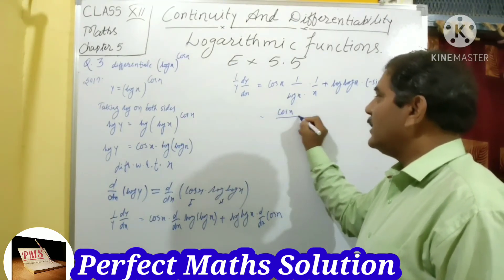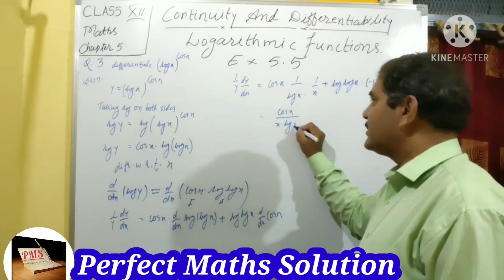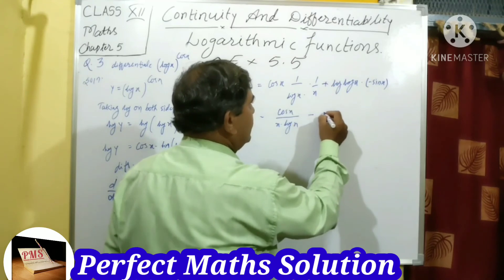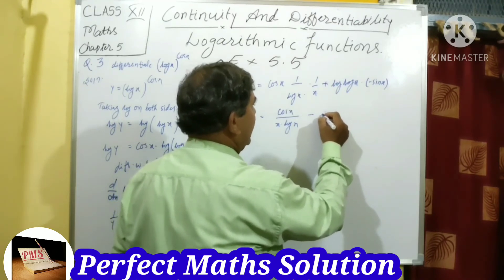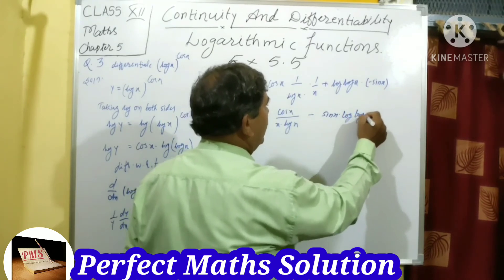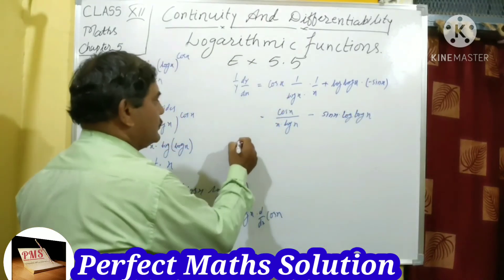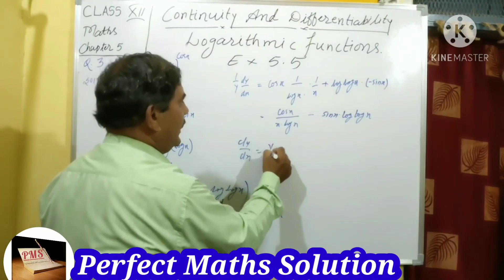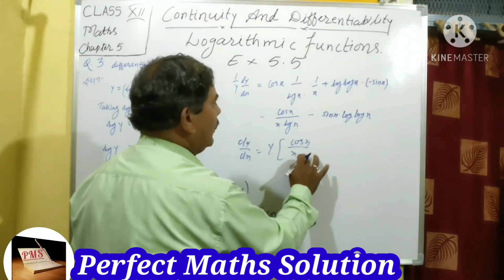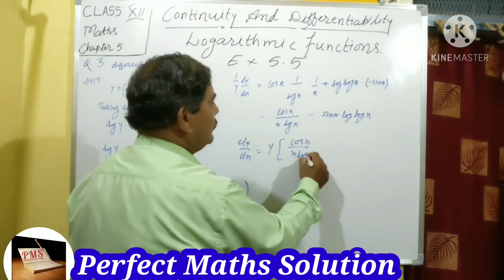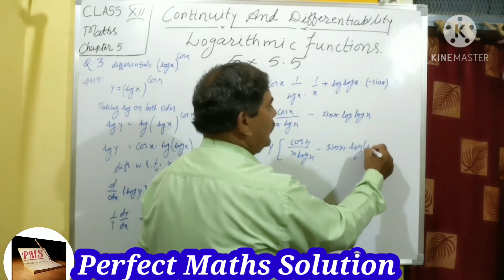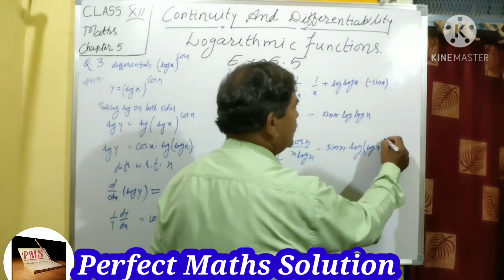This simplifies to: cos x/(x·log x) − sin x·log(log x). So dy/dx equals y·[cos x/(x·log x) − sin x·log(log x)].